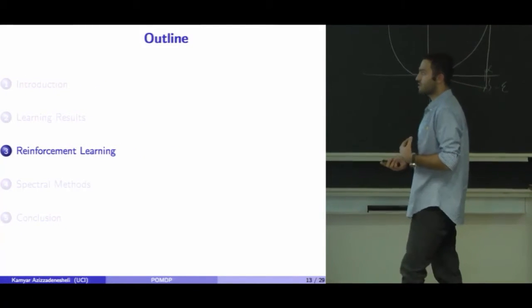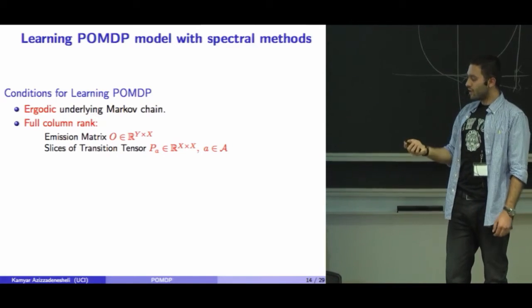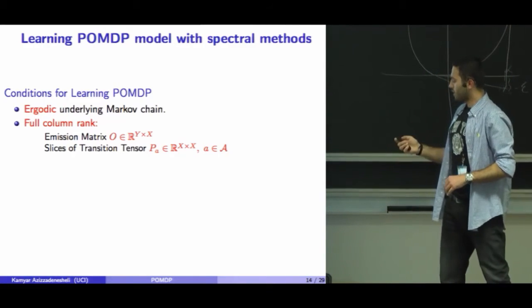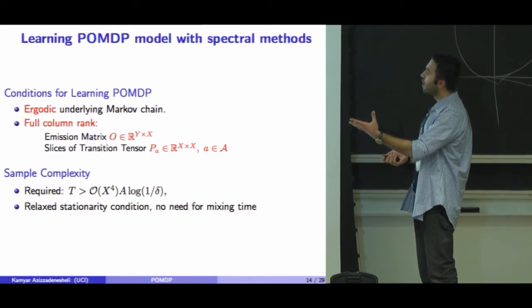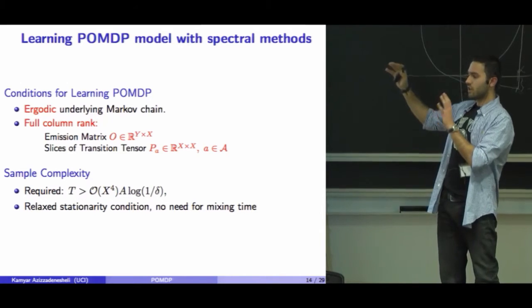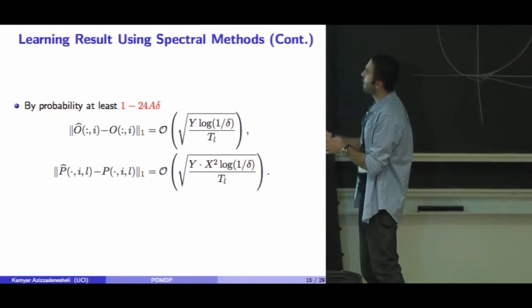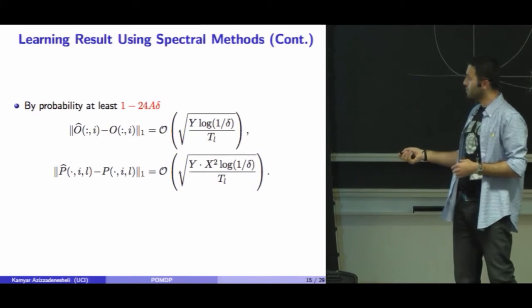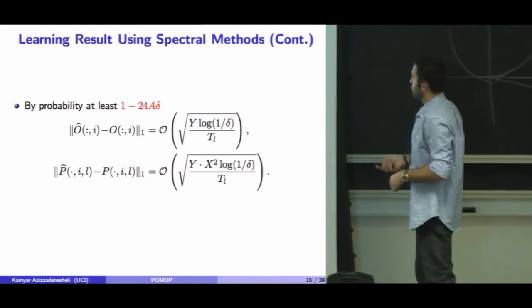Now we know how to do the learning part. The conditions for POMDP to be learnable are: the emission matrix O should be full column rank, and the slices of the transition tensor should be full column rank. We show that if the number of samples is larger than some order of X to the power of 4 times A — where X is the number of hidden states and A is the number of actions — then we can learn the model parameters with accuracy that decreases as we increase the number of samples. This result is order-optimal for each fiber of the transition tensor and each column of the emission matrix.